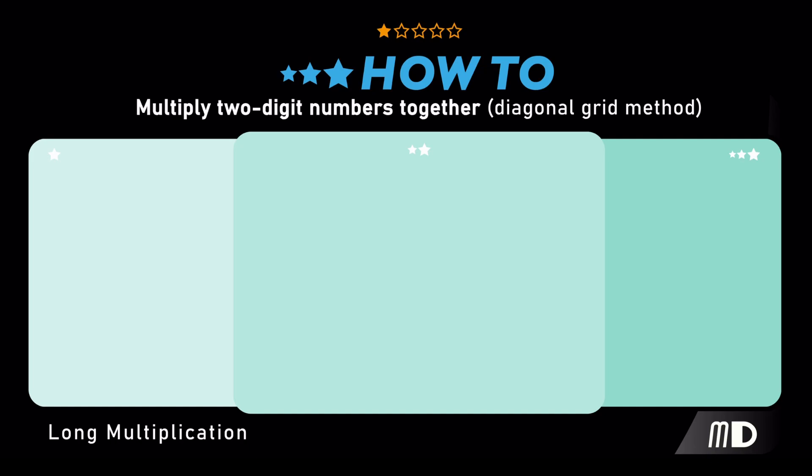Now in this video, I'm going to demonstrate how to multiply two numbers together using a grid method. In this example, I'll be multiplying together two two-digit numbers. This method can also be expanded for larger numbers.